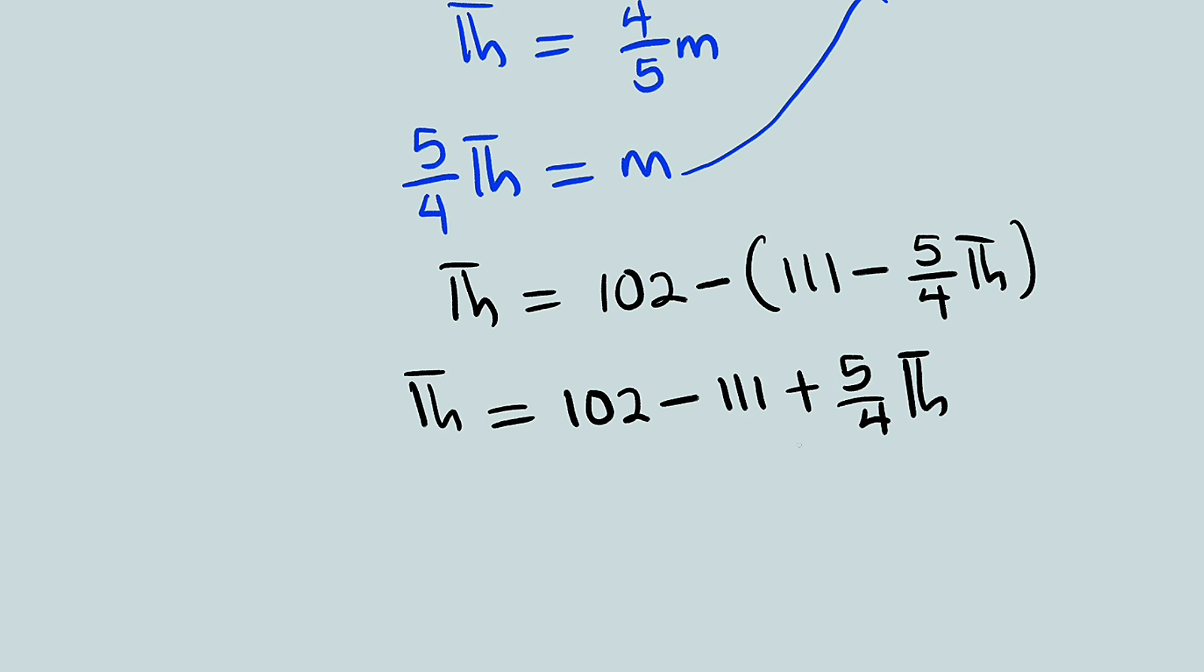To clear the fractions, I think we can multiply every single term by 4. So let's do that. 4 times TH to the left, we have 4 TH equal to 4 times 102 will give us 408 minus 4 times 111 is 444. Then 4 times this will just clear the 4, we have 5 TH.